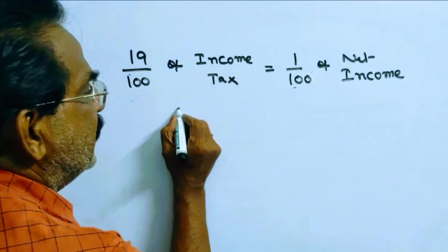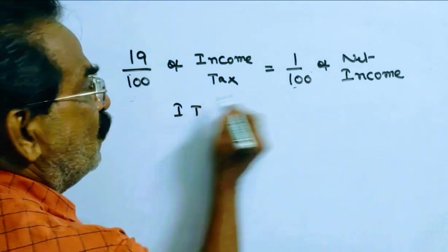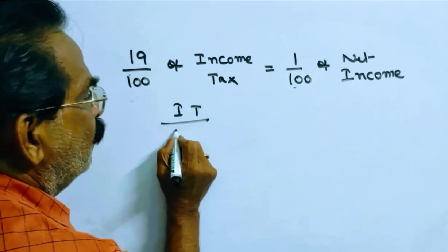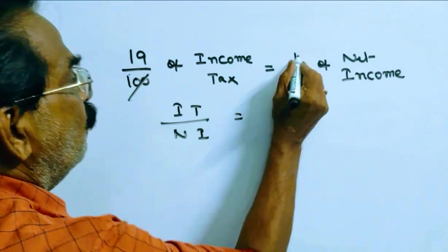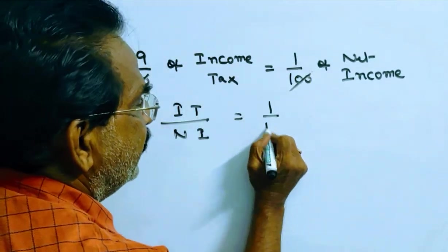It implies income tax over net income is equal to 1 by 19.